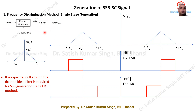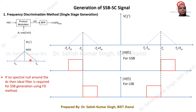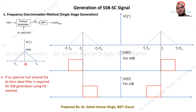For example, consider a message signal whose frequency spectrum is shown. This multi-tone message signal has a maximum frequency of FM, and its spectrum starts right from frequency f equals zero. When we multiply this message signal with the carrier AC cos(2πFCt), we get the double sideband suppressed carrier modulated wave.